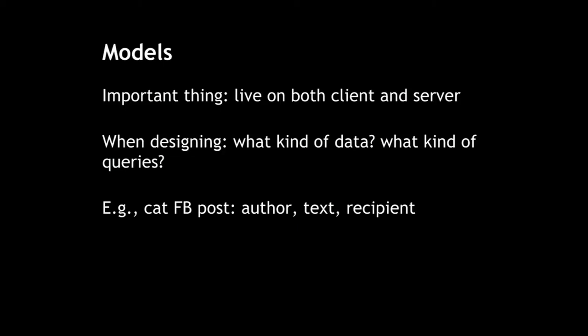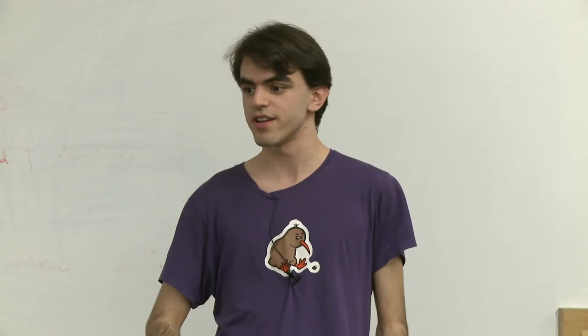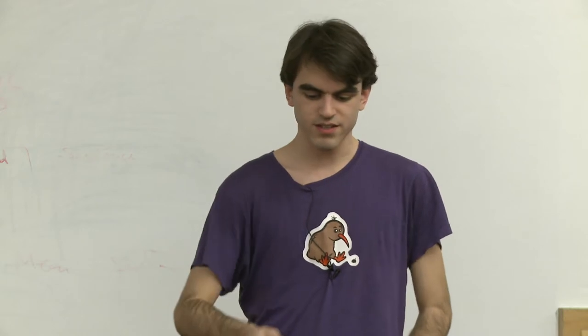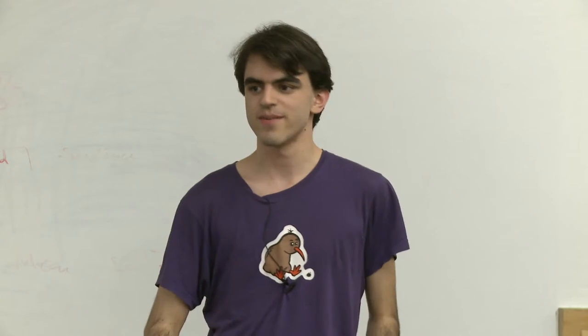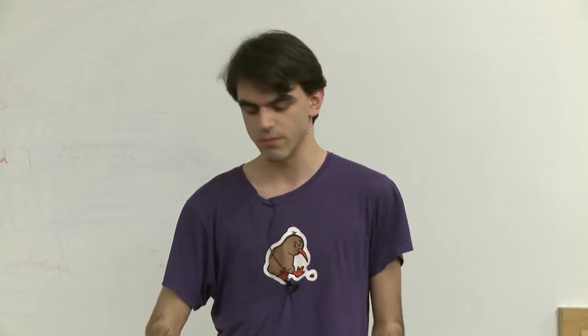For your cat Facebook example, your post is going to have an author, some wall post text, and a recipient. You might want to query by who wrote which post, who received which post, or by date posted — but if you're going to do it by date, you have to add a date field to your post. These two factors — what data you want to use and how you want to view it — depend on each other, so think about them first because it's more difficult to add them later.